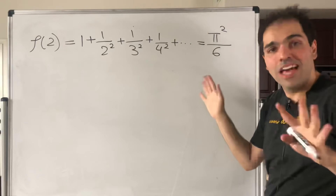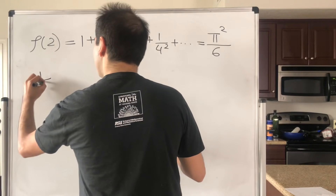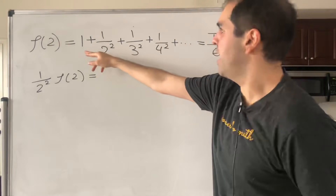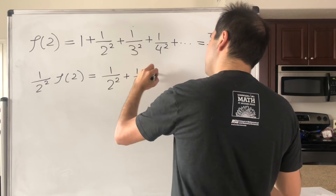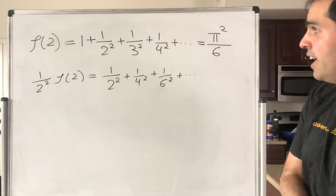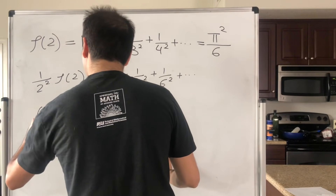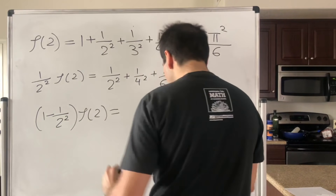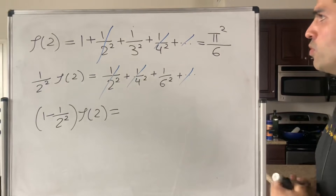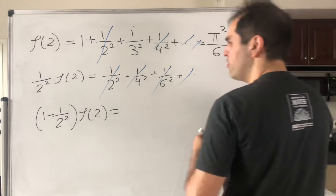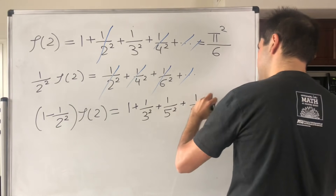Let's apply the following clever calculation. What if we take zeta of two and divide it by two squared? So one over two squared times zeta of two — all the denominators become even, giving one over two squared plus one over four squared plus one over six squared, dot dot dot. Now let's take the original sum and subtract this. If you do one minus one over two squared, times zeta of two, all the even terms disappear, and what we're left with is simply one plus one over three squared plus one over five squared — all the odd terms — plus one over seven squared, et cetera.